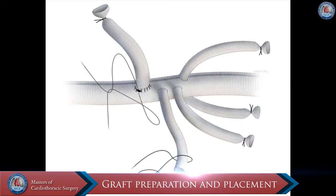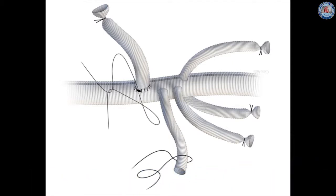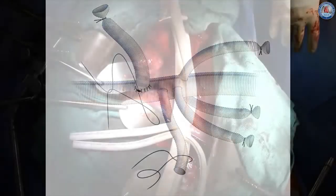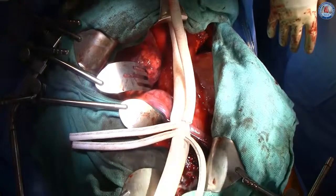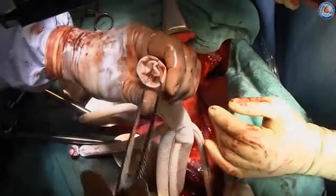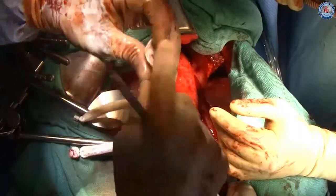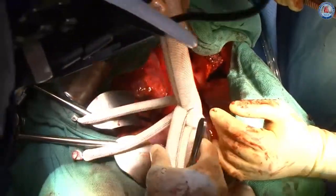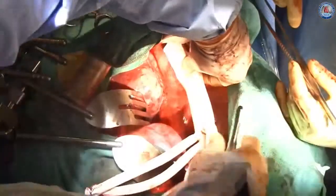An additional 14mm Dacron graft is attached to the main body, which will allow reattachment of the intercostal arteries. The graft is oriented so that the celiac graft lies at the level of the diaphragm. A reverse elephant trunk is now created in preparation for any needed procedures.